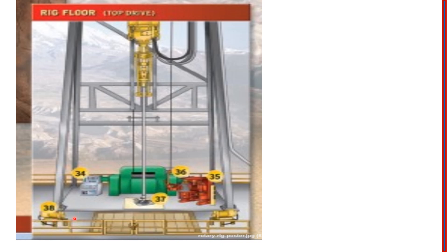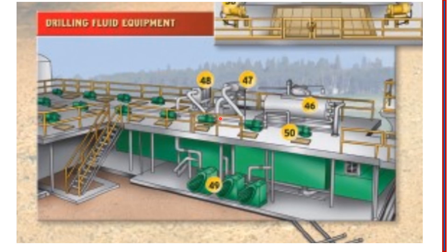Number 38 is the air hoist, also called a winch. Number 46 is the degasser. Number 47 is the desander. Number 48 is the desilter. Number 49 is the centrifugal pump. Number 50 is the mud agitator. These are all drilling mud processing equipment.